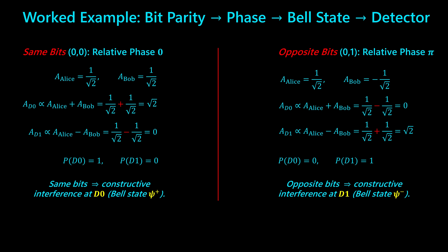Putting both sides together, the pattern is extremely clean. Same bits produce zero relative phase, which produces the symmetric Bell state, which sends all amplitude to D0. Opposite bits introduce a pi phase flip, producing the anti-symmetric Bell state, which sends all amplitude to D1. Charlie never learns the actual bits — he only learns whether the bits were the same or different based on which detector fires. But that single piece of information is exactly what Alice and Bob need in order to build their secret key in the entanglement-based version of BB84.